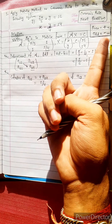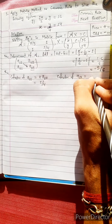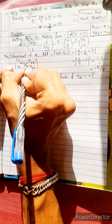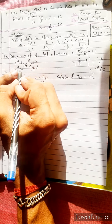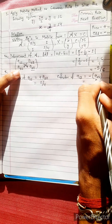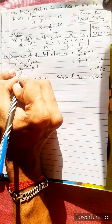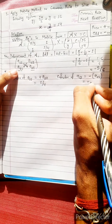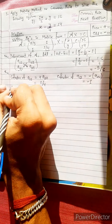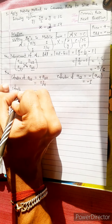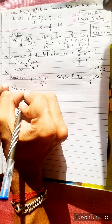Since the index sum for a1,2 is odd, the cofactor is negative. The cofactor of a1,2 is the opposite element a2,1, so cofactor of a1,2 equals minus a2,1, which equals minus 1.